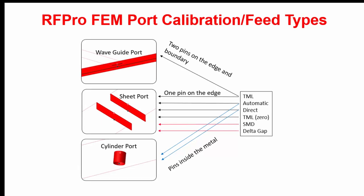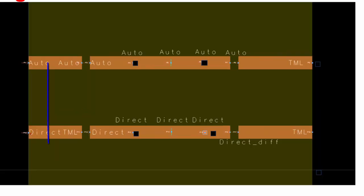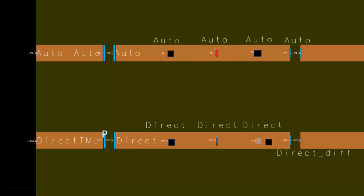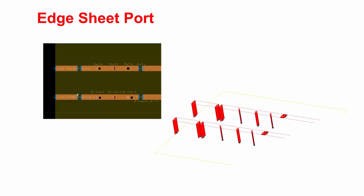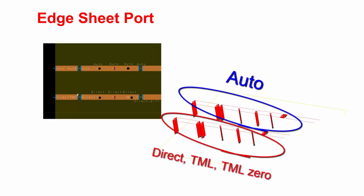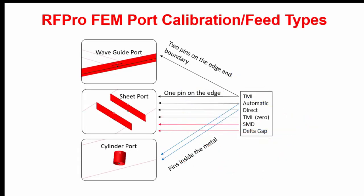The shape port is commonly used and in auto mode by default — any pin on an edge can generate it. For instance, a pin attached to the edge of a model, whether on the edge of a polygon or internally, will automatically create a rectangular sheet connecting the positive and negative pins. The auto type creates edge pins equivalent to those set up as direct at any edges, TML or TML0 inside the model, eliminating the need to specify port types.